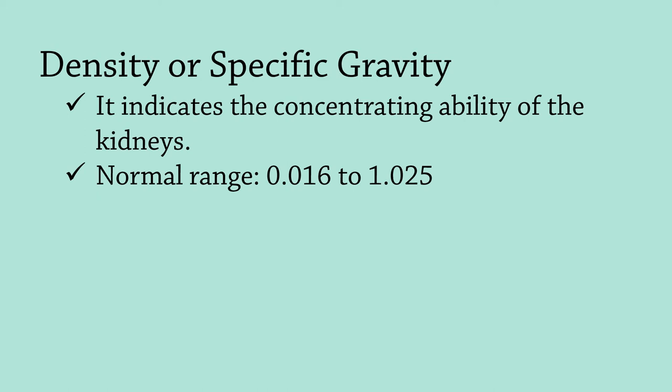Specific gravity normally varies from 1.016 to 1.025, with an average of 1.020. Measurement of specific gravity is done by urinometer.